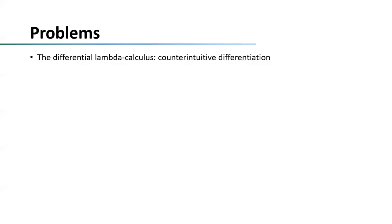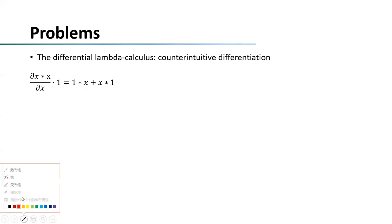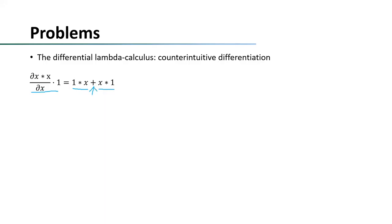Let's first take a look at the differential lambda calculus. For example, if we want to calculate the derivative of x multiplied by x at point one, we write the term as partial of x multiplied by x, partial x at point one. In the differential lambda calculus, it finds there are two alternatives to substitute for x, so you get the result as one multiplied by x plus x multiplied by one, where the plus means there are two choices for substituting x. So far so good.